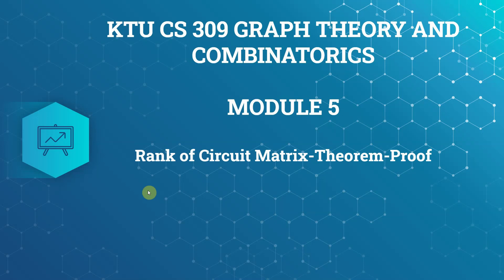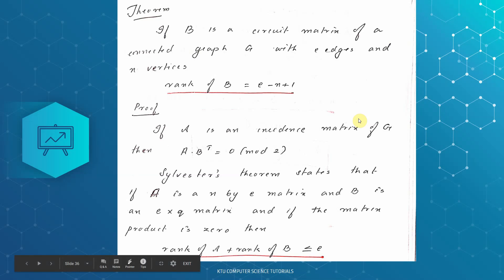I am going to discuss the theorem proof for the rank of the circuit matrix. The theorem states that if B is a circuit matrix of a connected graph G with e edges and n vertices, then the rank of B is equal to e minus n plus 1. For a connected graph with n vertices and e edges, the rank of that particular circuit matrix will be equal to e minus n plus 1.